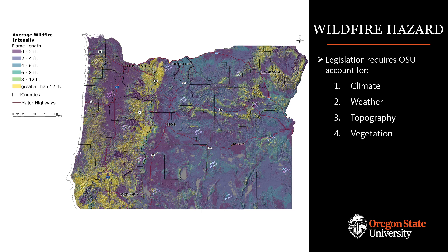The four criteria do not account for specific structure level defensible space or fire hardening characteristics. Those kinds of risk mitigation actions — for instance, sprinklers, metal roofs, managed landscaping, etc. — are demonstrated to increase structure survivability and are hugely important to risk reduction actions. However, the intent of the map is to help state agencies prioritize community defense measures in areas with the greatest environmental exposure to wildfire. If and when a property meets the criteria for the relevant regulations, then those structure level risk mitigation characteristics, defensible space, and fire hardening would be accounted for during the compliance process.